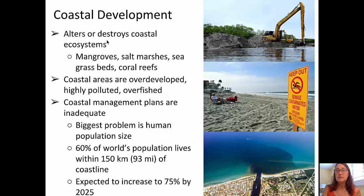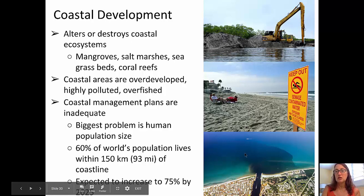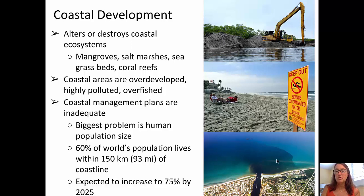You can see the impact in the top picture — there's a steam shovel actually dredging out an area, destroying a mangrove. In the middle picture, you see a sign indicating contaminated water. And in the bottom picture, you can see the outflow from an area near West Palm Beach, Florida, where there is outflow that's obviously different from the ocean water.